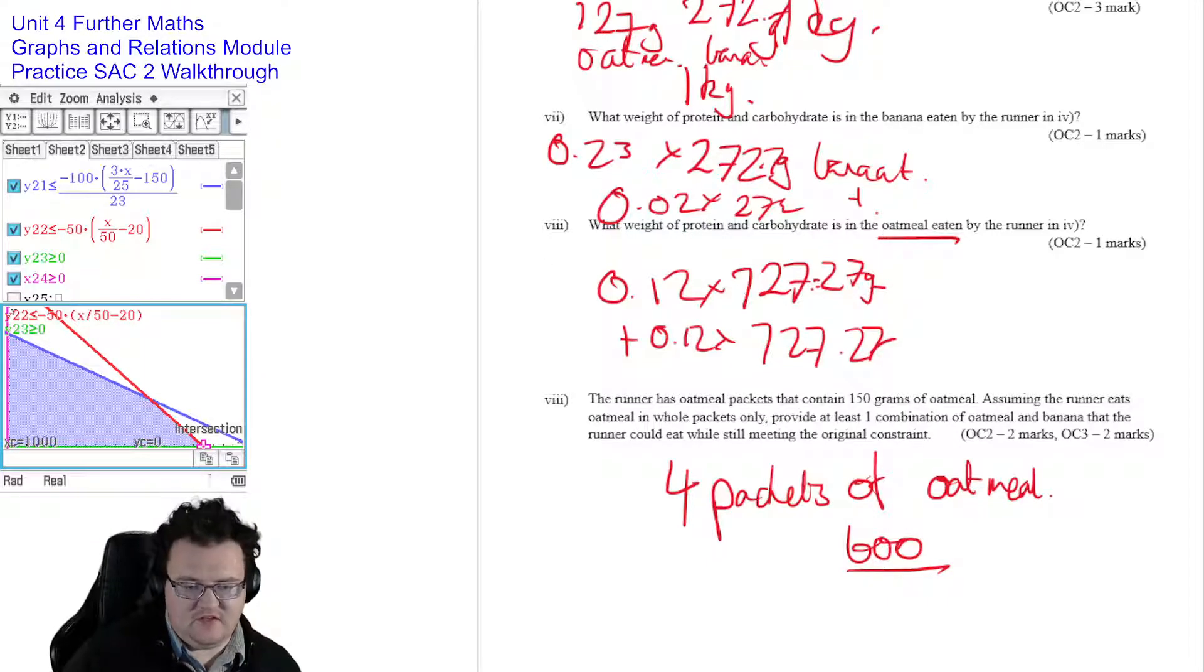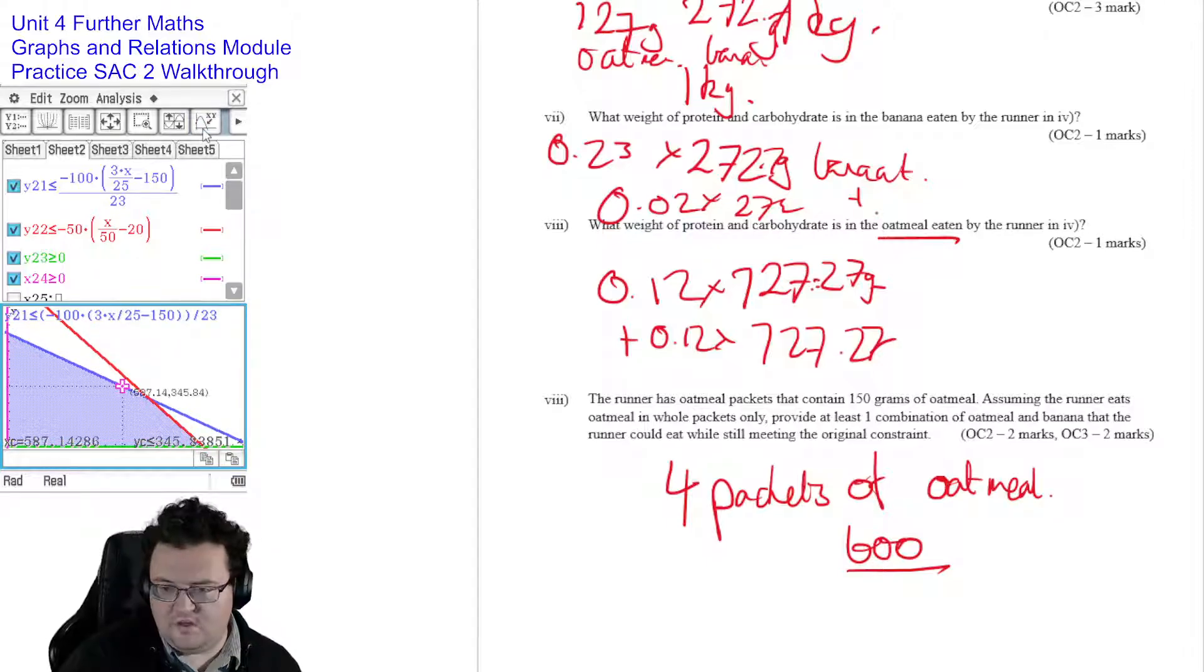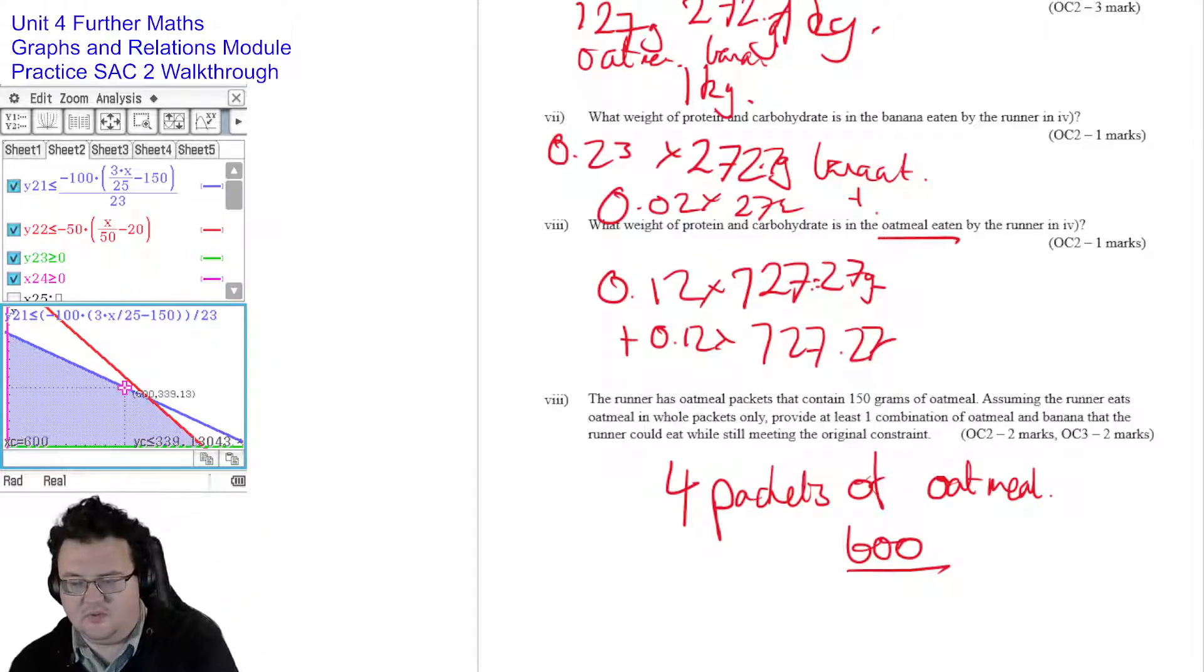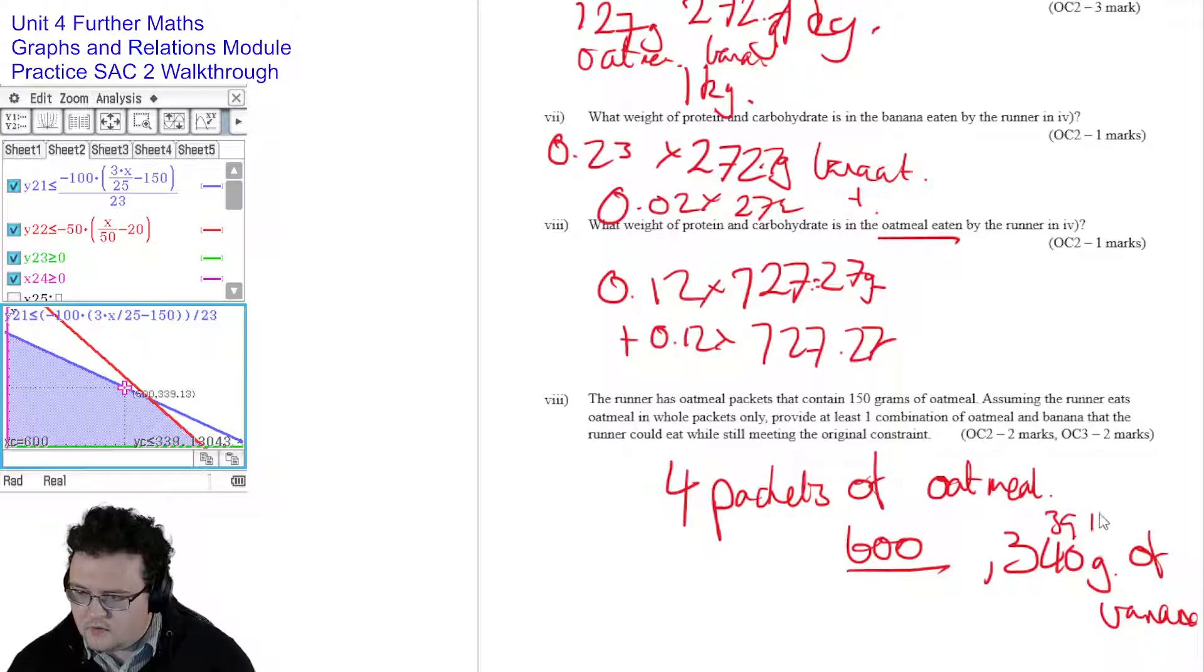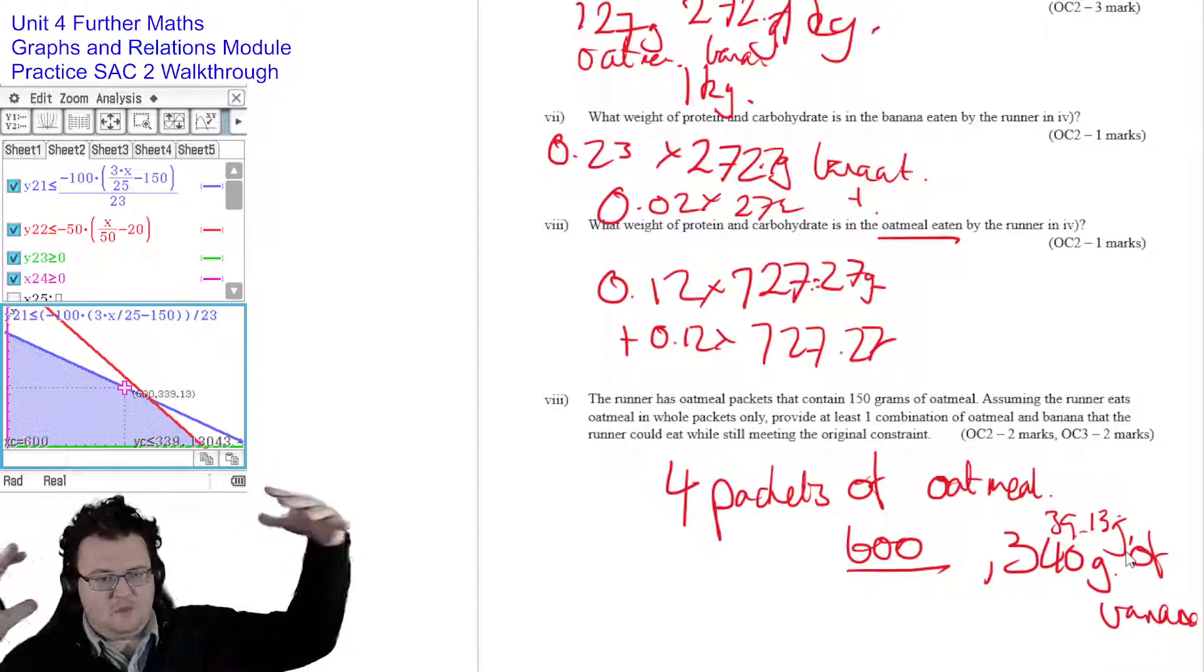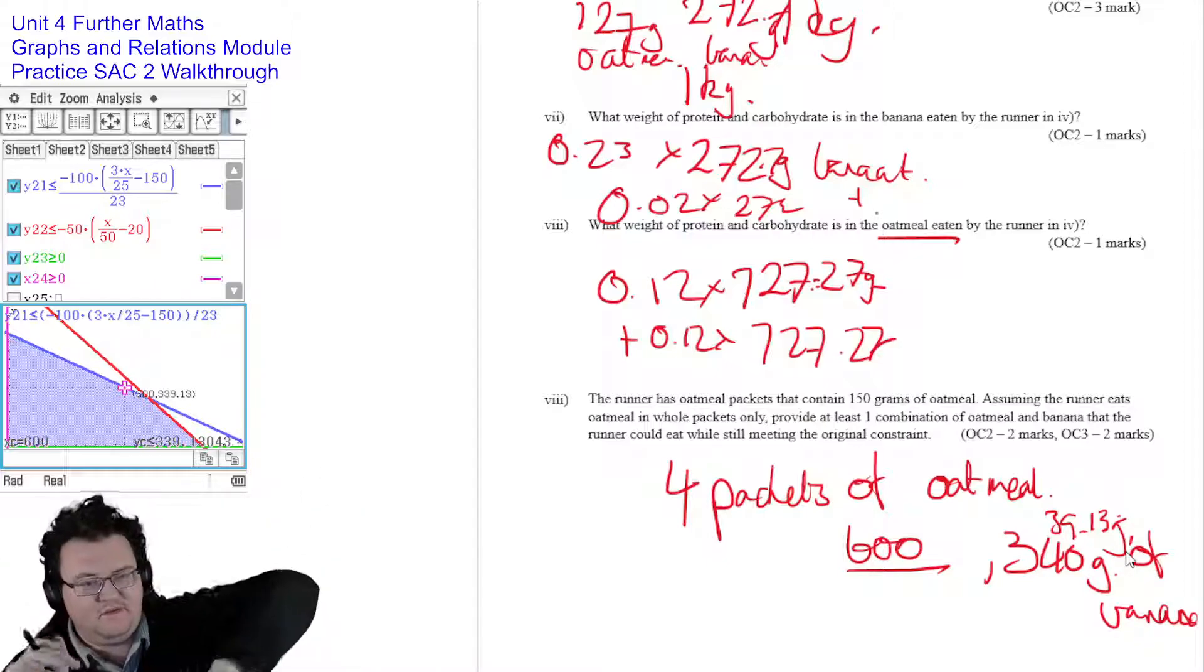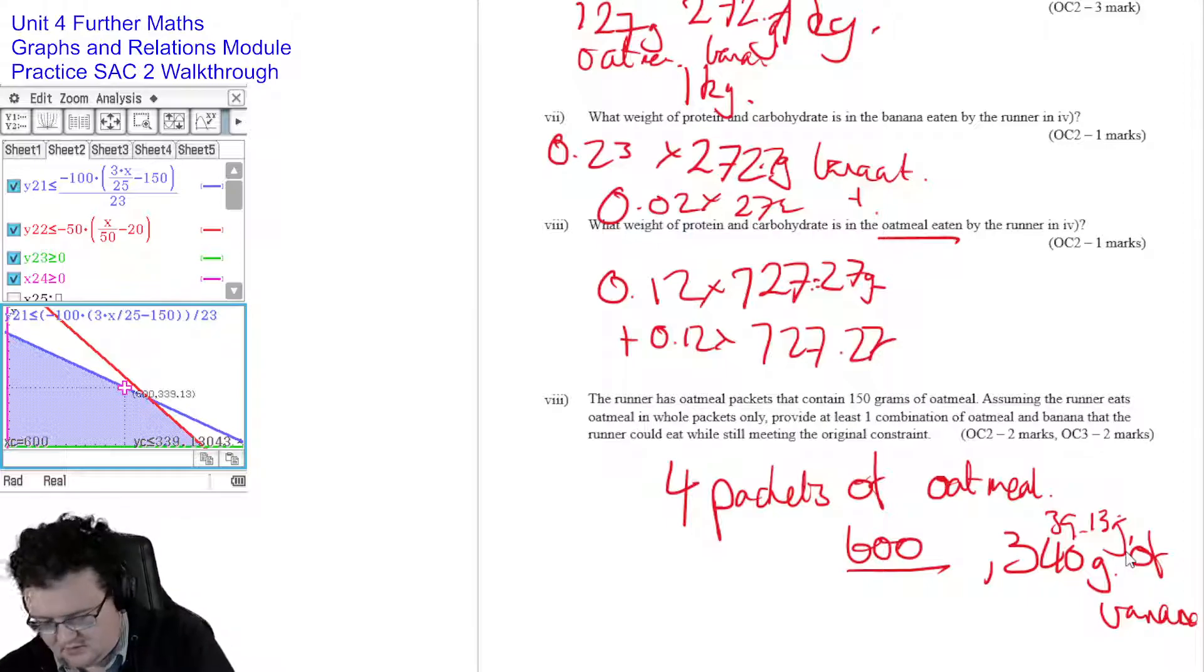While still meeting the original constraint means that everything that we've done on the graph still applies. So 600 is going to be on this blue line, so it's 600. So it's not a corner point, but it's still important to recognise that he's going to then need to eat, what does it say there, 330, 340 grams of banana. So you can, so you can get away, 339.13 of banana and still meet that original constraint because that is within the feasible region. That's the way I would look at it anyway.